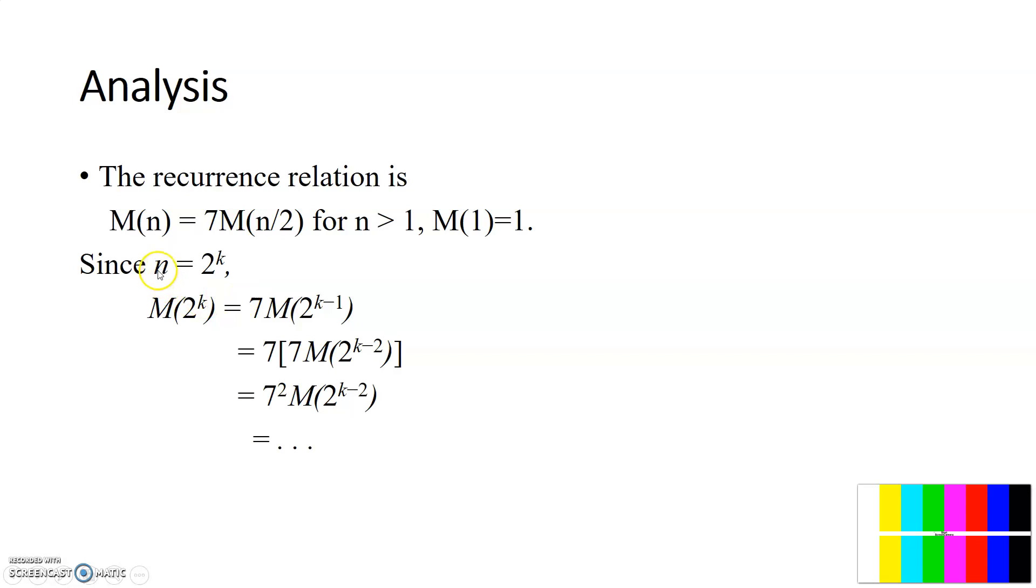Before that, first you have to substitute the N value as 2 to the power of k here. So now M of 2 to the power of k equal to 7 into M of 2 to the power of k minus 1 here. If M of 2 to the power of k value is 7 into M of 2 to the power of k minus 1, then M of 2 to the power of k minus 1 value becomes...